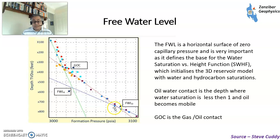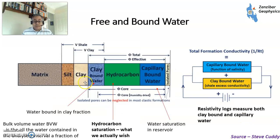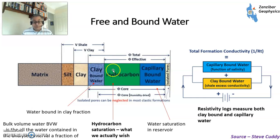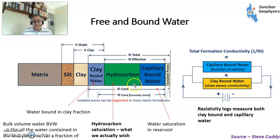Another diagram from Steve Cuddy shows what a typical rock volume is made of: matrix (e.g. quartz or limestone grains), silt, clay (V-shale), clay-bound water - because some clay minerals attract and retain water - then capillary-bound water and hydrocarbon. The hydrocarbon saturation is what you actually want to know. However, the resistivity log reads both capillary-bound water and clay-bound water, which tends to be a problem, particularly in shaly sands where there is quite a lot of clay material. This means you could overestimate hydrocarbon saturation using traditional methods.